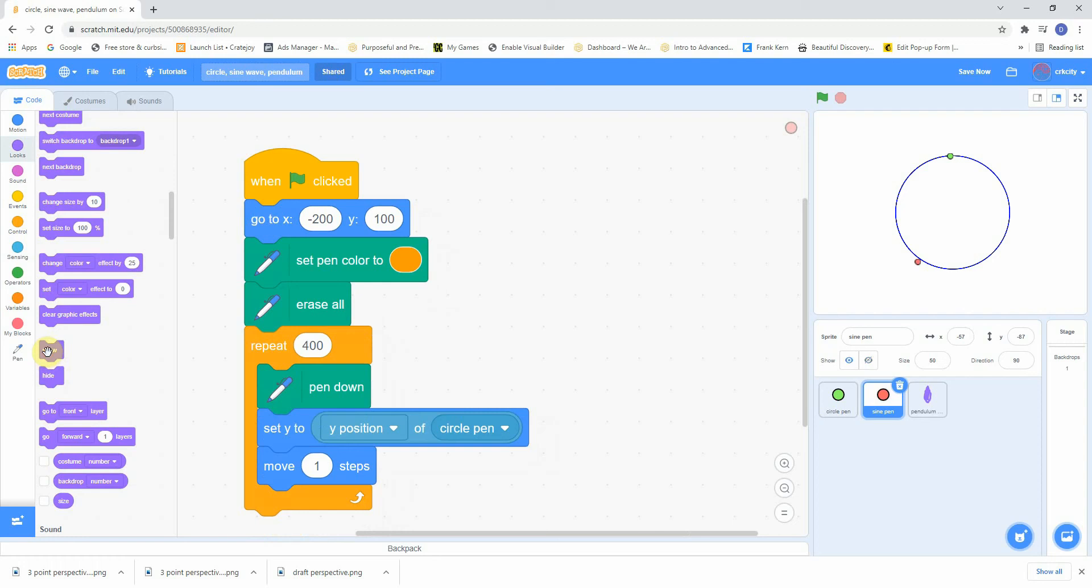Now just match the up-down point, the Y position. There's really just one command here that's set Y to Y position of circle pen. That matters. That's the command that's making this sine wave. That's it. You haven't even done any trigonometry and you're getting a sine wave.